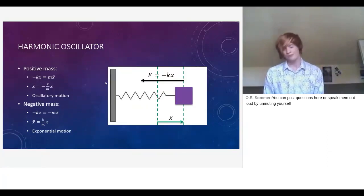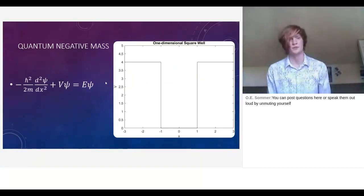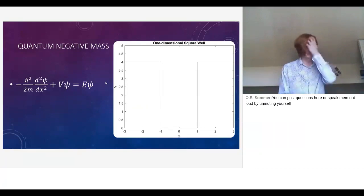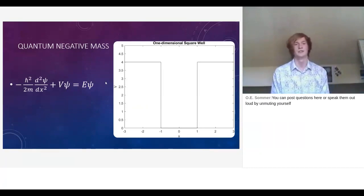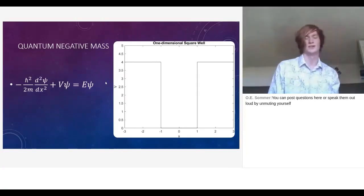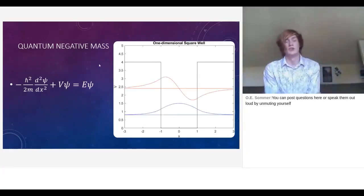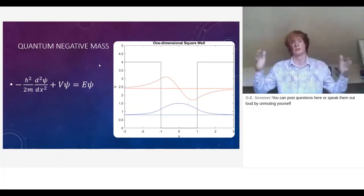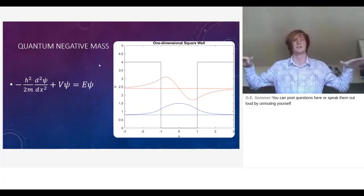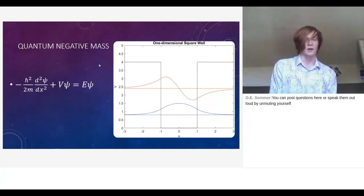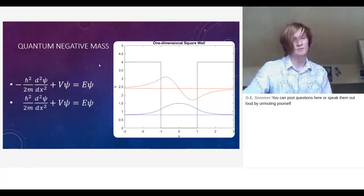Let's get quantum physics involved. In a one-dimensional finite square well, considering energies less than the barrier, the solutions for a positive mass show oscillatory behavior inside the well where the particle is happy to be, and exponential decays into the walls as the particle tries to tunnel out.